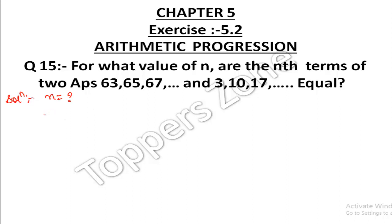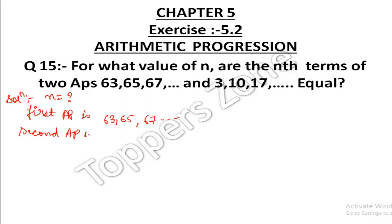We have two APs given. The first AP is 63, 65, 67 and so on. And the second AP is 3, 10, 17 and so on.